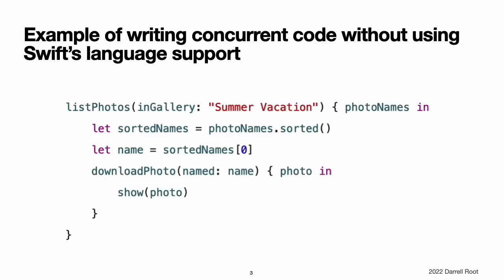Although it is possible to write concurrent code without using Swift's language support, that code tends to be harder to read. For example, this code downloads a list of photo names, downloads the first photo in the list, and shows that photo to the user. Even in this simple case, because the code has to be written as a series of completion handlers, you end up writing nested closures. In this style, more complex code with deep nesting can quickly become unwieldy.